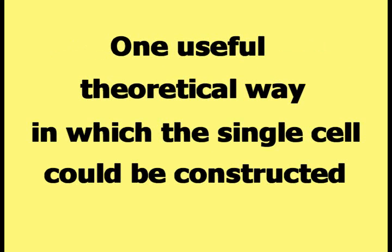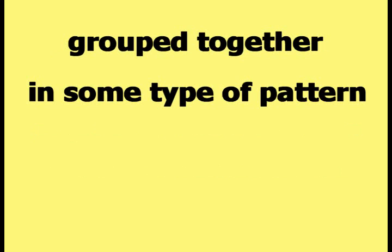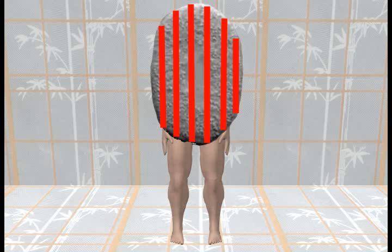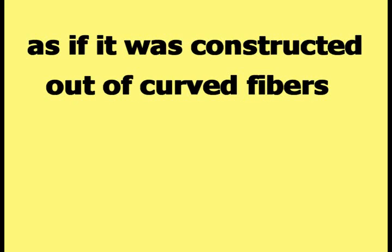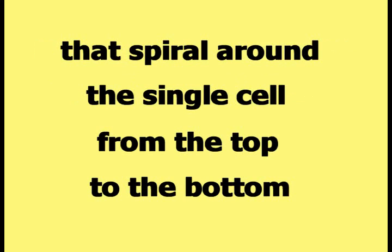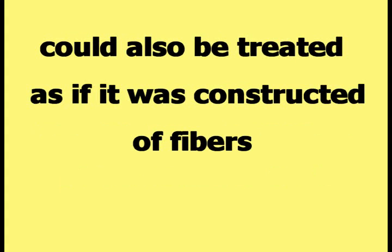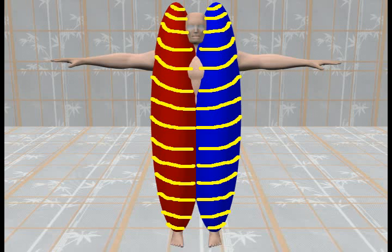One useful theoretical construction would be a tightly packed array of fibers grouped together in some type of pattern. The single cell could be treated as if it was constructed out of a group of straight vertical fibers, as shown in this picture, or out of curved fibers that spiral around the single cell from top to bottom, as shown in this picture. That would mean each cell of the dividing cell view could also be treated as if it was constructed out of fibers — this picture shows a vertical fiber pattern, and this picture shows a spiral fiber pattern on both cells.